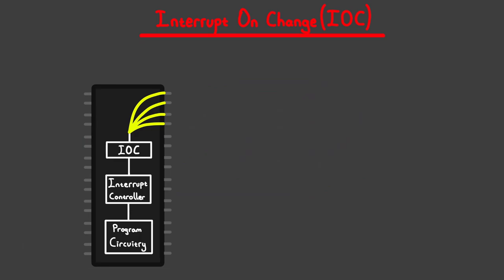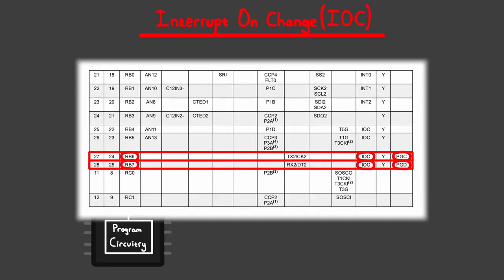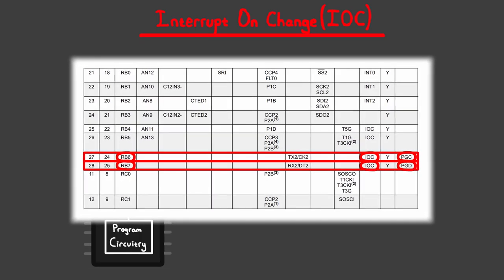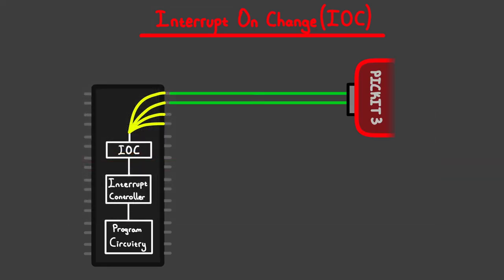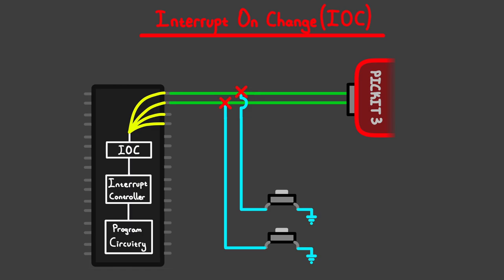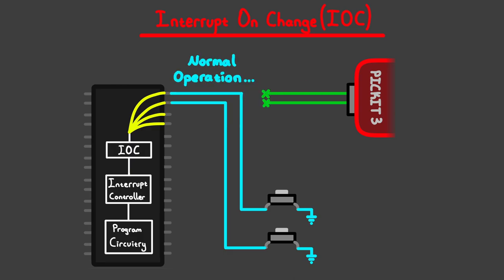There is also a problem for this microcontroller: two of the IOC pins are also used for programming. There can be complications when these pins are used for both programming and I/O at the same time, so I recommend avoiding that. If you really need to use these pins as IOC, disconnect your circuit before programming, then disconnect the programmer and reconnect your circuit. I would just recommend avoiding this altogether — especially because with this conflict, you won't be able to debug your project no matter what.